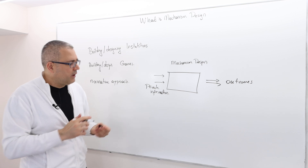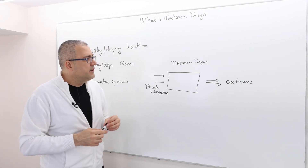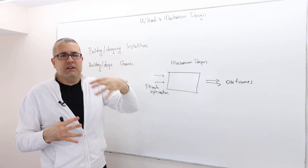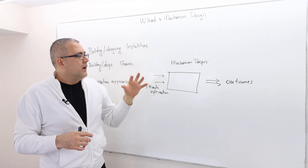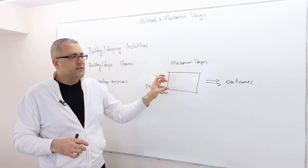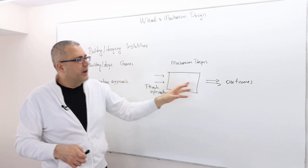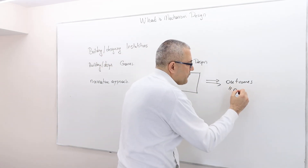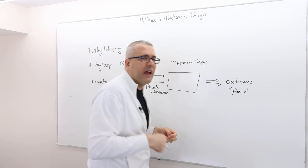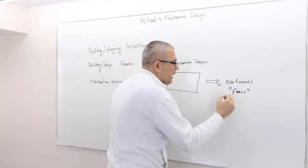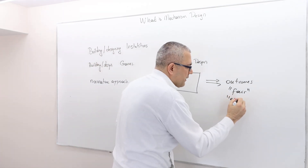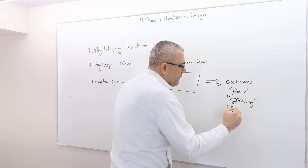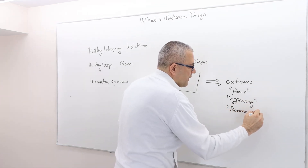Why is that so? The designer — the mechanism designer — is designing this game to achieve certain outcomes. For example, fairness could be an objective, so we want the outcome to be fair or efficient, or revenue maximizing — whatever objective you're seeking for the outcomes to satisfy.